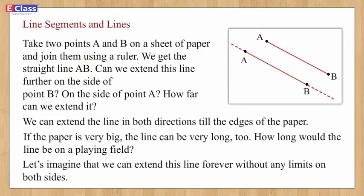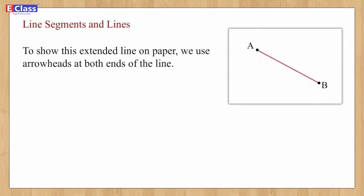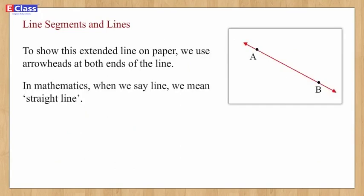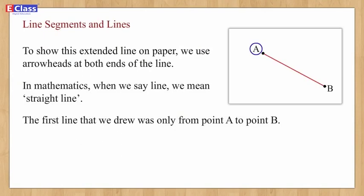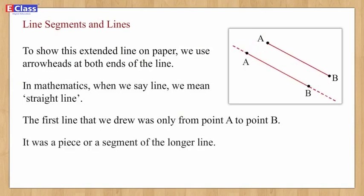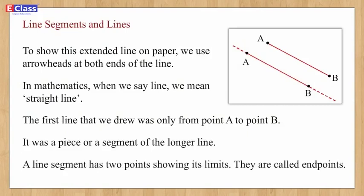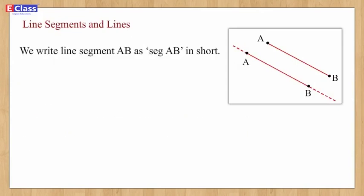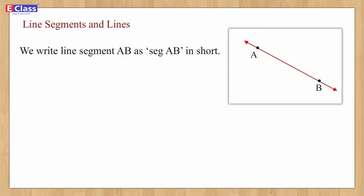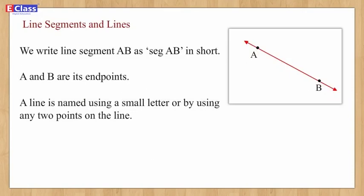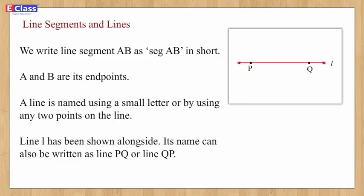How long would the line be on a playing field? Let's imagine that we can extend this line forever without any limits on both sides. To show this extended line on paper, we use arrowheads at both ends. In mathematics, when we say 'line' we mean a straight line. The first line we drew from point A to point B was a segment of the longer line. A line segment has two endpoints. We write line segment AB as segment AB. A line is named using a small letter or by using any two points on it — for example, line L, or line PQ.